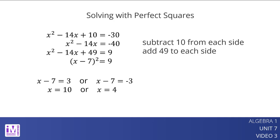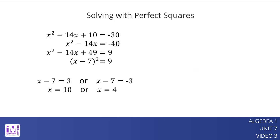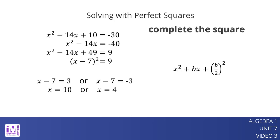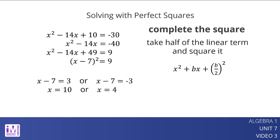In general, perfect squares in standard form look like x squared plus bx plus (b over 2) squared. So, to complete the square, take half of the coefficient of the linear term and square it. In the example, half of negative 14 is negative 7, and negative 7 squared is 49.